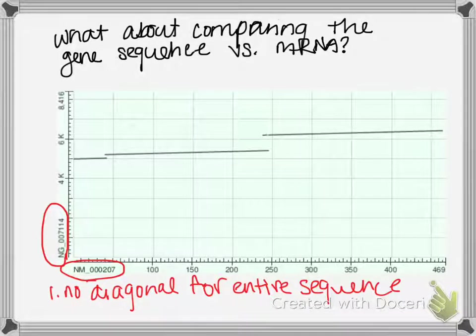Another thing that we can notice is that on the y-axis here, there's 8,416 nucleotides, where on the x-axis, it's only 469. So that already tells us that we're looking at different length sequences.